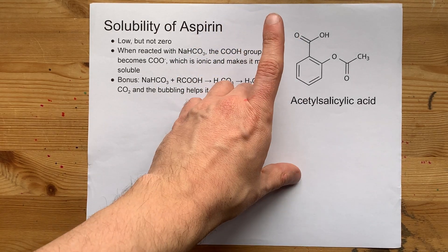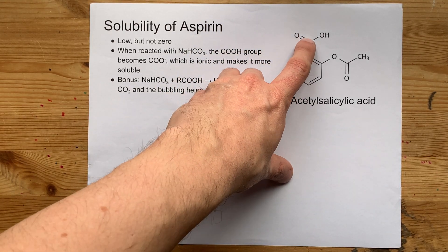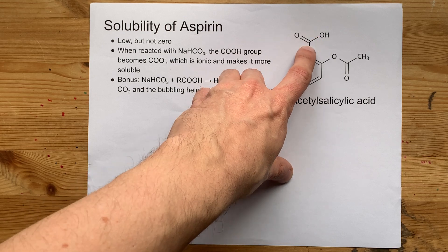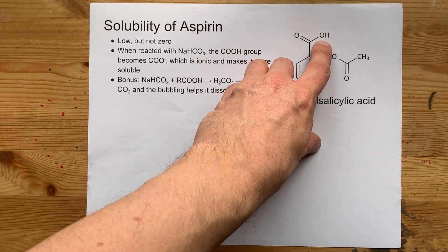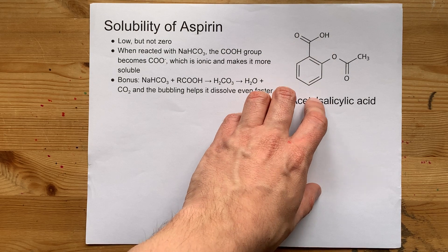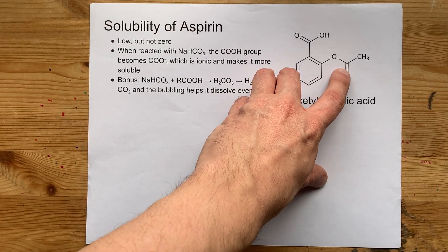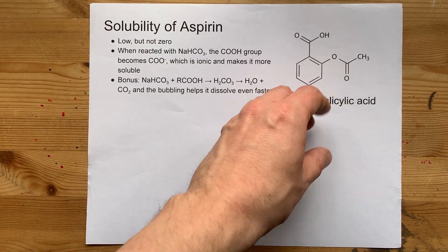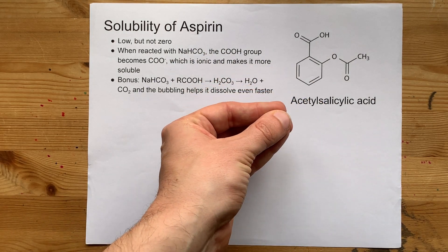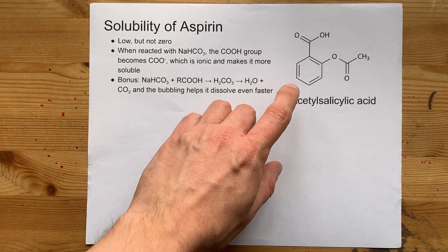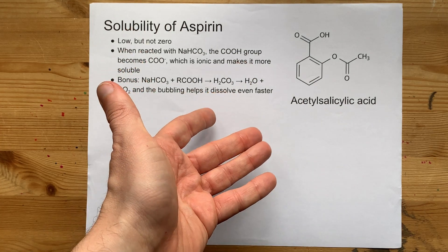There are polar groups on this molecule. This COOH group is polar and will actually have a little bit of hydrogen bonding with water. And this ester group is also slightly polar. But the benzene ring here is very non-polar.